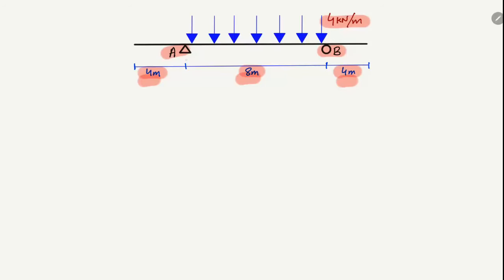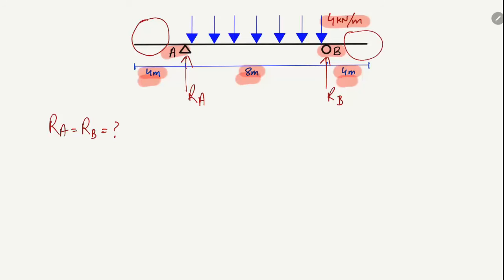Here is the hinge support and here is the roller support. The hinge support can take the vertical reaction, and the roller support can also take the vertical reaction. We have to find out RA and RB. This is an overhanging beam because this portion of the beam is not supported and it is a free end — this is also a free end — that's why it is known as the overhanging beam.